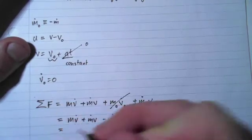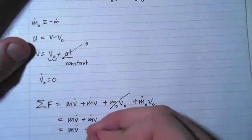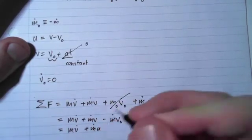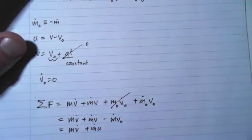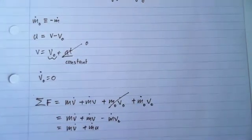And that just becomes mv dot plus m dot u, where u, as we said before, was the relative velocity of the mass flowing out of the body.